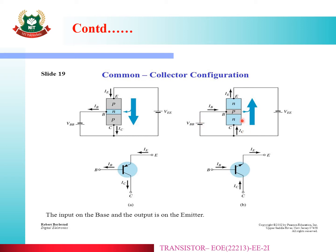That is why the base is connected to the positive terminal of the power supply. The N-type material consists of electrons, which carry negative charge. That is why the N-type material is connected to the negative terminal of the power supply. This is how to draw the circuit diagram. The emitter consists of negative charge particles, and the collector is connected to the positive terminal.